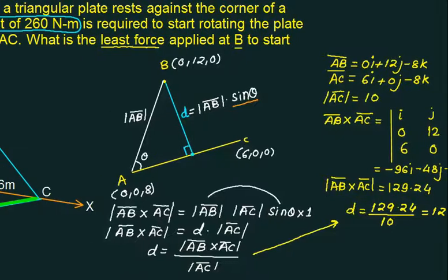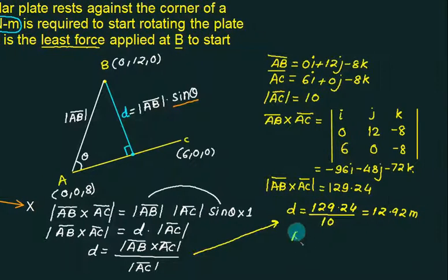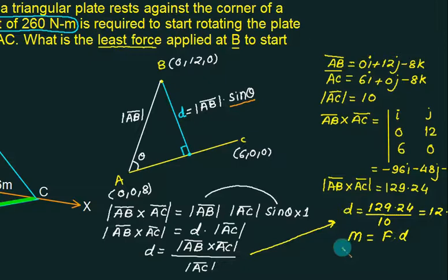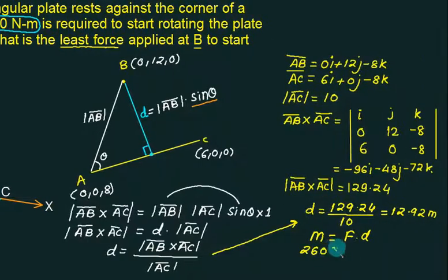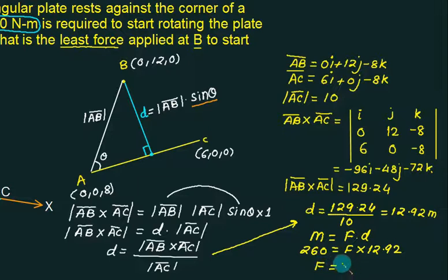Now we find the force. M = F × d, so 260 = F × 12.92. Therefore the minimum force required is F = 260 / 12.92 ≈ 20.11 N.